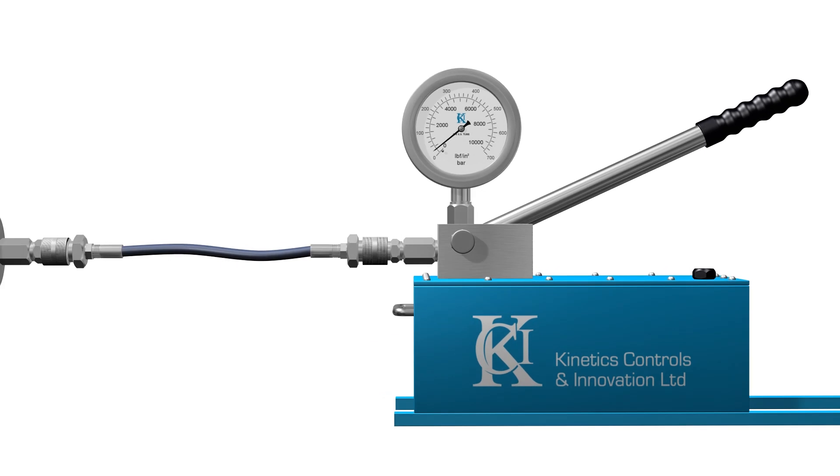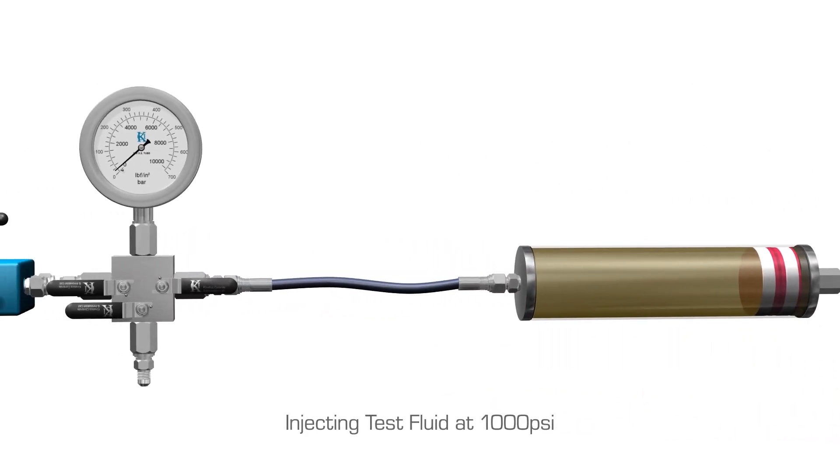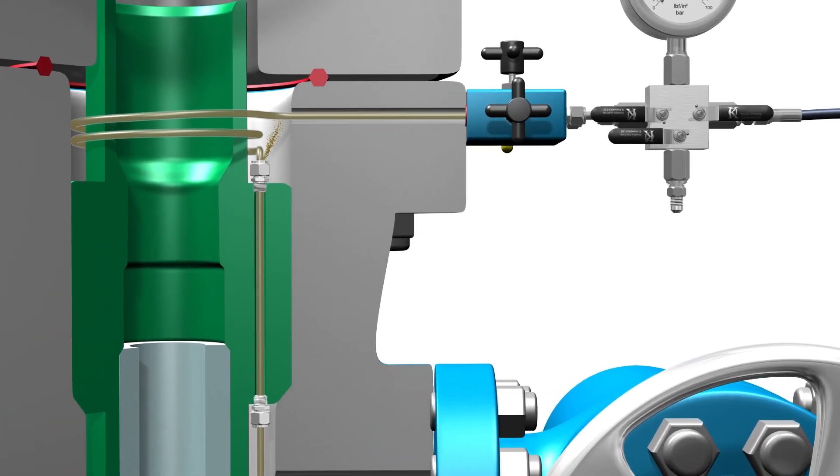This will indicate the leak rate and pressure buildup achievable. There can be multiple leak points in the system so it can be difficult to pinpoint the location at this stage.